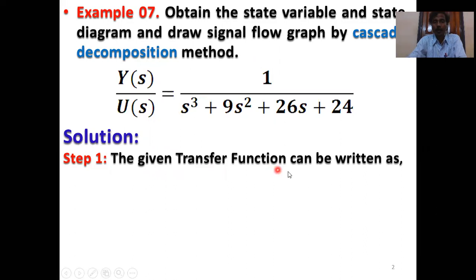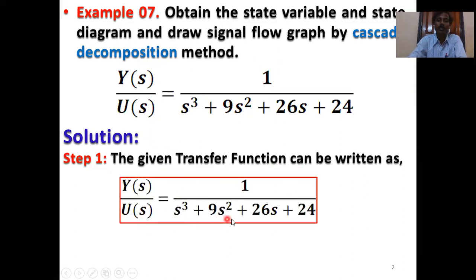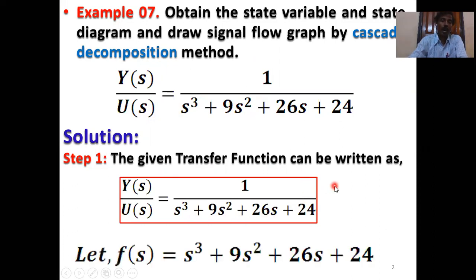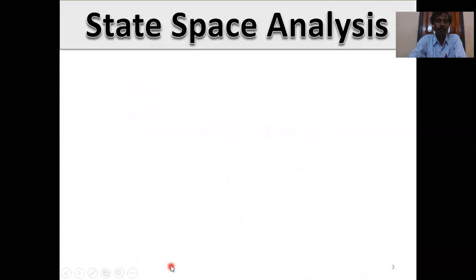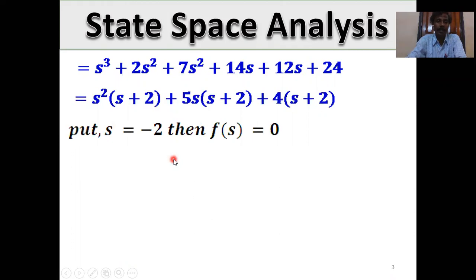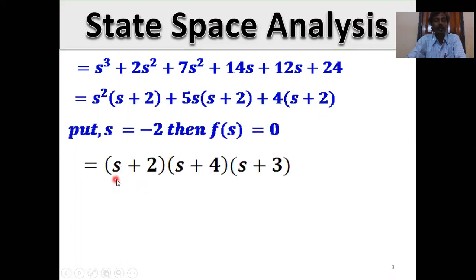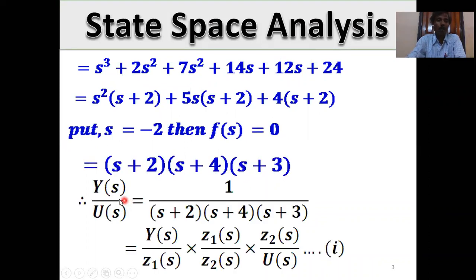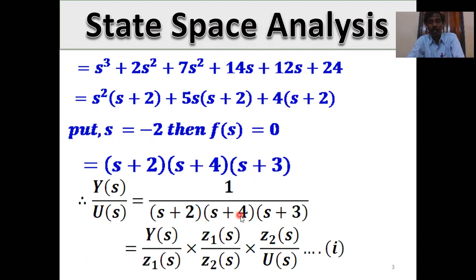Solution. Step 1: The given transfer function is Y(s)/U(s) = 1 / (s³ + 9s² + 26s + 24). Define f(s) = s³ + 9s² + 26s + 24. Put s = −2: f(−2) = 0, so s = −2 is one of the roots. Therefore (s + 2) is a factor. The denominator factors as (s + 2)(s + 4)(s + 3).